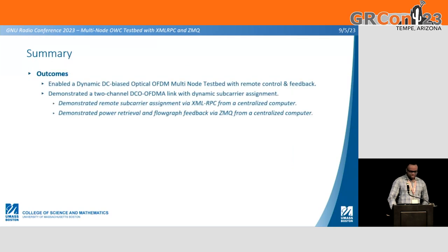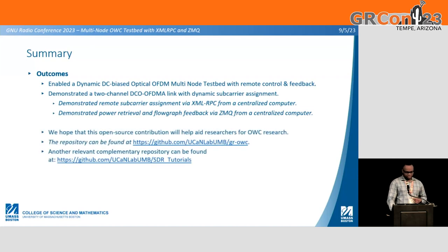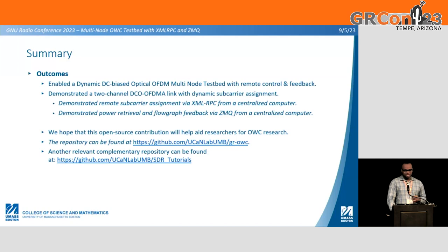Outcomes: We enabled a dynamic DC bias optical wireless OFDM multi-node testbed with remote control and feedback. We demonstrated a two-channel DC-OFDMA link with dynamic subcarrier assignment, remote subcarrier assignment via XMLRPC from a centralized computer, and power retrieval and flow graph feedback via ZMQ from a centralized computer. We hope this open-source contribution will help aid researchers for OWC research. Repositories for all relevant flow graphs and scripts, as well as a complementary repository containing SDR tutorials for GNU Radio and packet error rate testing with XMLRPC and ZMQ, are available at the provided links.